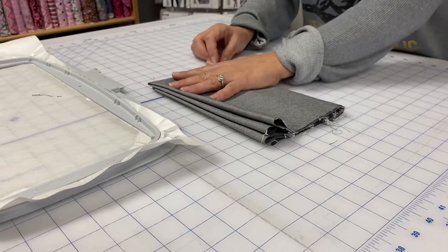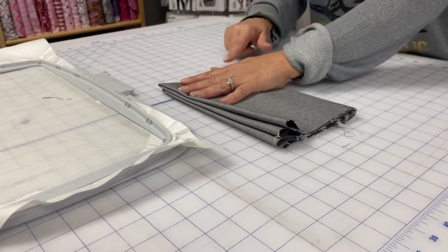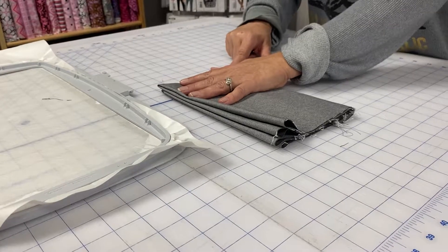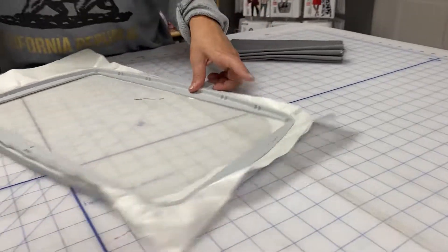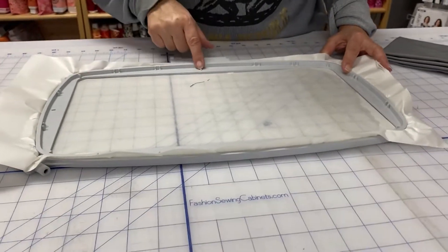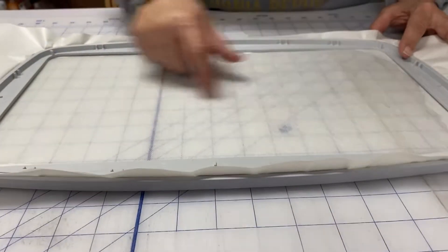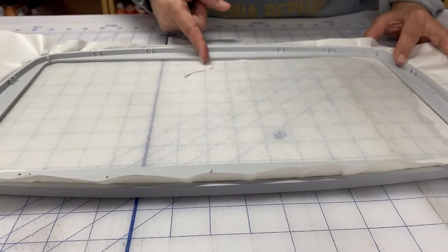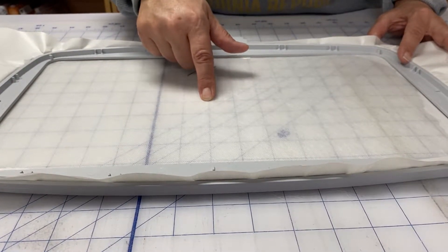Okay, now I know that my absolute center of my embroidery area is this spot right here. I'm going to take it over to my hoop and I will line up the little marks on my hoop with my cutting lines.